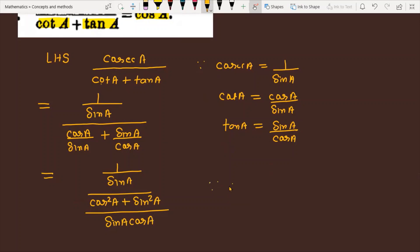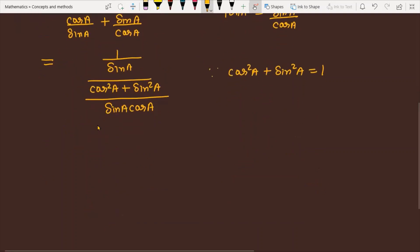We know very well that cos²A plus sin²A is equal to 1. So this becomes 1 upon sin A divided by 1 upon sin A cos A.